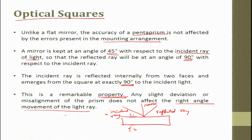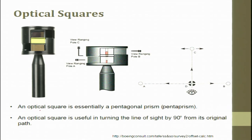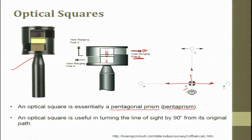This is a very important device. The optical square, which is used to check the perpendicularity of any object, is essentially a pentagonal prism — a pentaprism. You can see the viewing ranges for poles A, B, and C. An optical square is useful in turning the line of sight by 90 degrees from the original path.